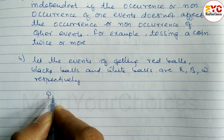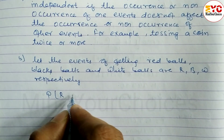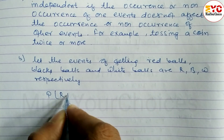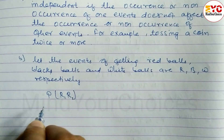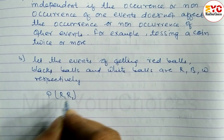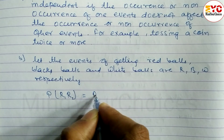Here we have to find out the probability of getting both red balls — R and R. We need the first ball to be red and the second ball also to be red.